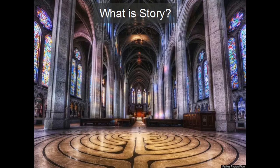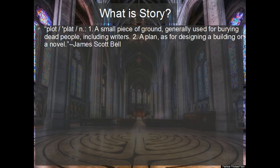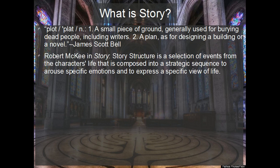But that still leaves us with the question: what is this mysterious order that creates story? My favorite definition came from James Scott Bell. Robert McGee, who wrote the book Story, defines it this way: story is a selection of events from the character's life that is composed into strategic sequence to arouse specific emotions and to express a specific view of life.